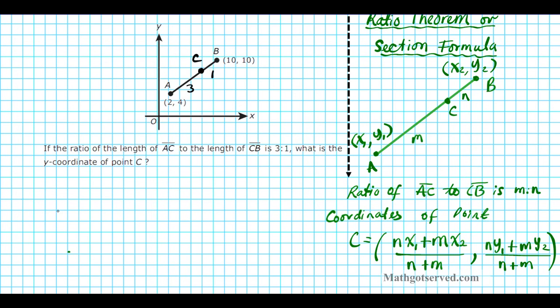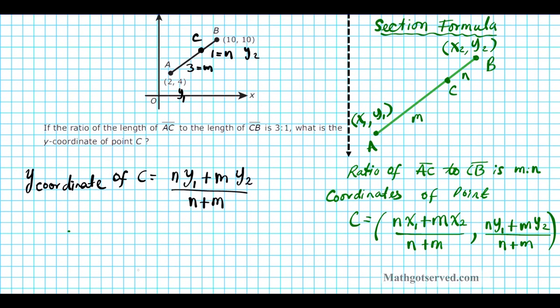So Y coordinate of C is given by just the Y component of this formula. N times Y1 plus M times Y2 divided by N plus M. So what is Y1 and Y2 in this formula? The Y coordinate of the first point is Y1 and this is Y2. This is M, the first section, and then this is N. Let's list it here. So we have Y1 is 4, Y2 is 10, M is 3, and N is 1.